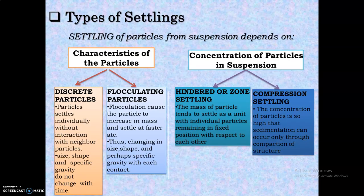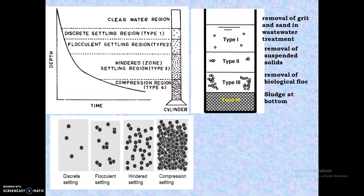The second type is flocculating particles, where flocculation causes the particles to increase in mass and settle at a faster rate. Because of this, there is a change in size, shape, and specific gravity with each contact. The particles get attracted and form a floc, and once this floc forms into a bigger size, it starts settling down. This is called flocculent settling.